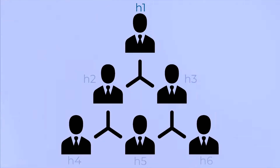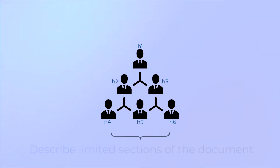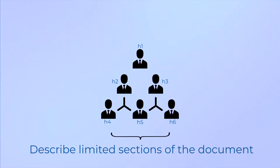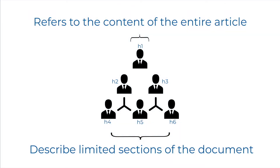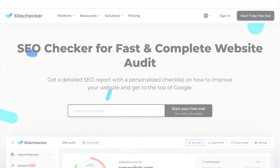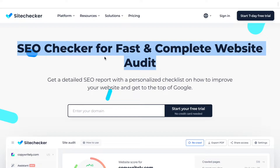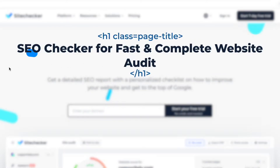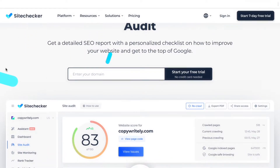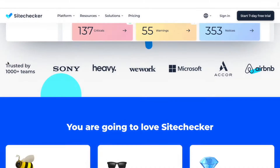Why is it so important to have an h1 tag? The h1 tag has the highest level in the hierarchy of headings of an HTML document. While headings of lower hierarchies h2 to h6 normally refer to a limited section of the document, the h1 tag refers to and describes the content of the entire article. Headings are usually formatted to convey their relative importance visually, so h1 tags normally have the largest font size and the most prominent highlighting, followed by h2, h3, and so on.